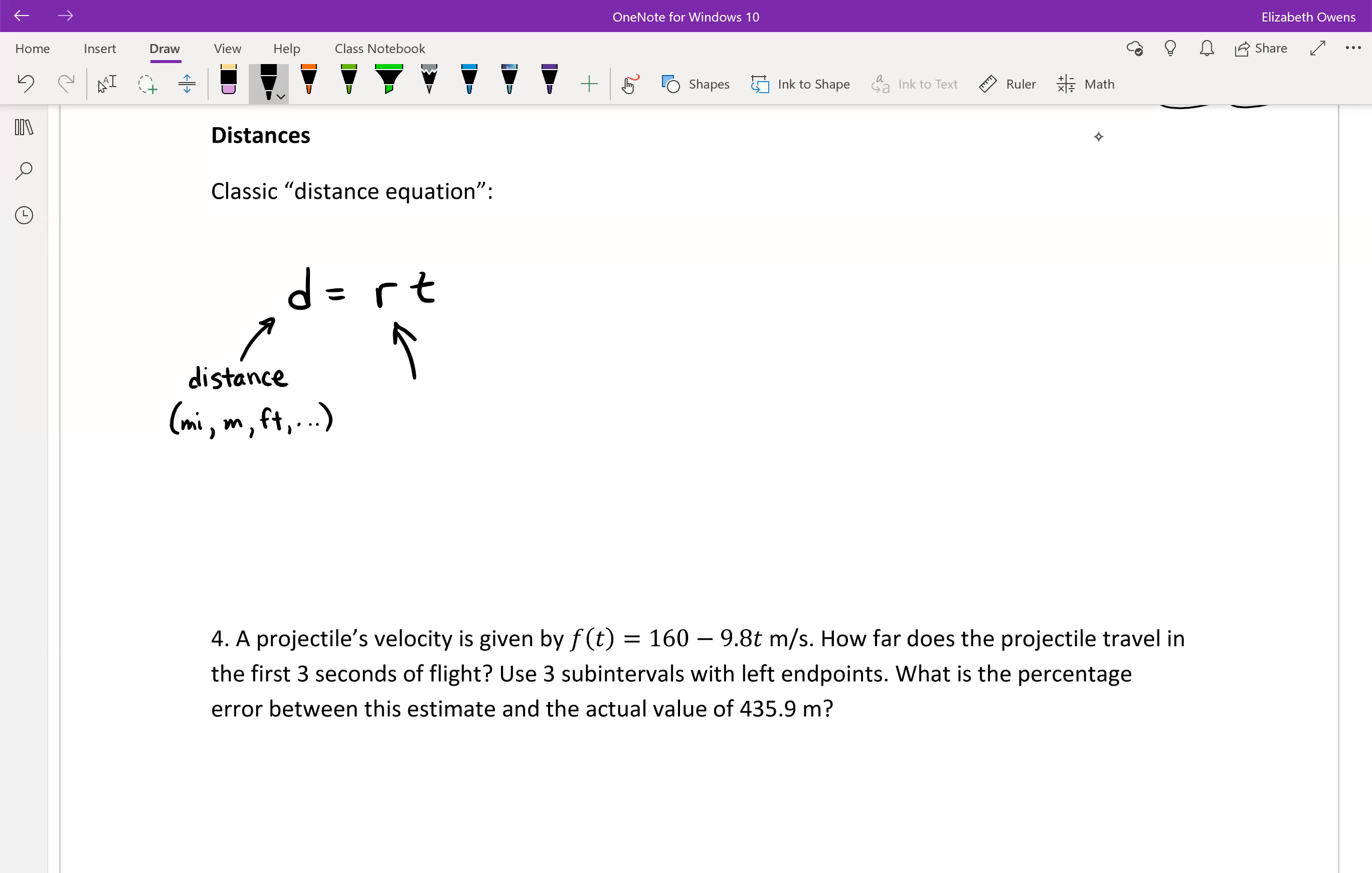R is for your rate. So rates in word problems could be given in things like miles per hour, meters per second, feet per minute, whatever you want there.